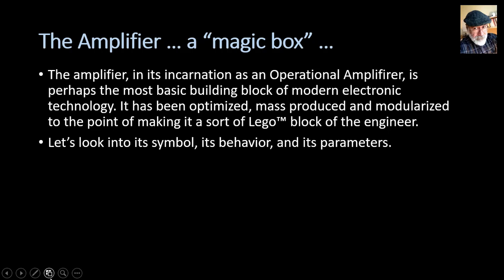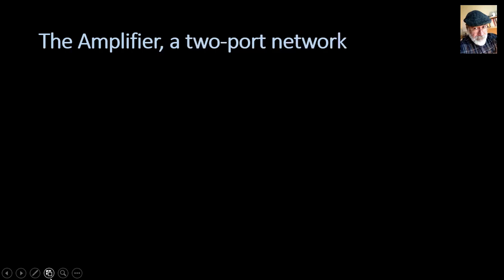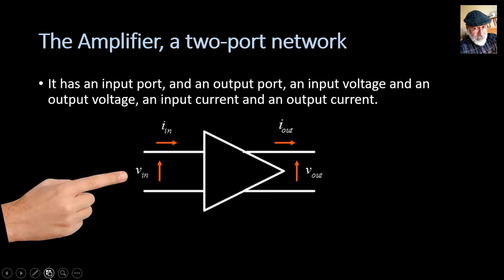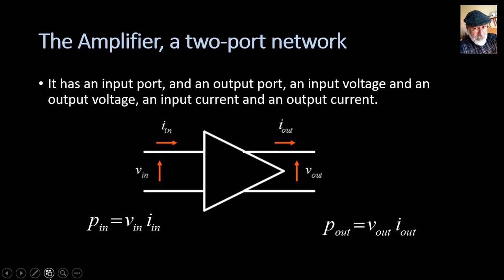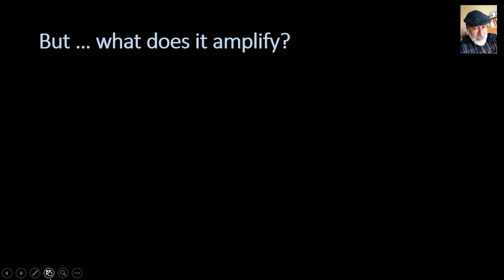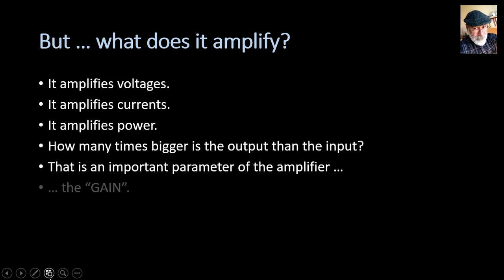Let's look into the symbol of the amplifier, its behavior, and its parameters. The amplifier is a two-port network. It has an input voltage, an output voltage, an input current, an output current, an input power, and an output power. But what is it amplifying? It amplifies voltages, currents, and power. How many times bigger the output is than the input is the first question we must ask. That is an important parameter — we call it the gain of the amplifier. Because we are considering three types of amplification — voltages, currents, and power — there are three gains: voltage gain, current gain, and power gain.